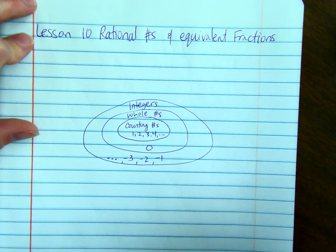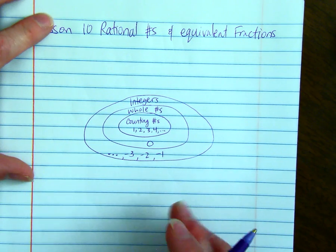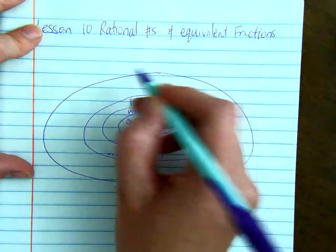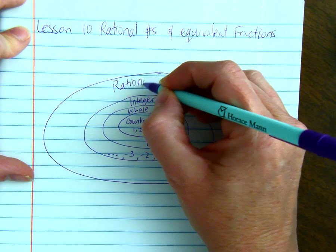And then if you were to add all the fractions, so any number that is a fraction, that would be our rational numbers.